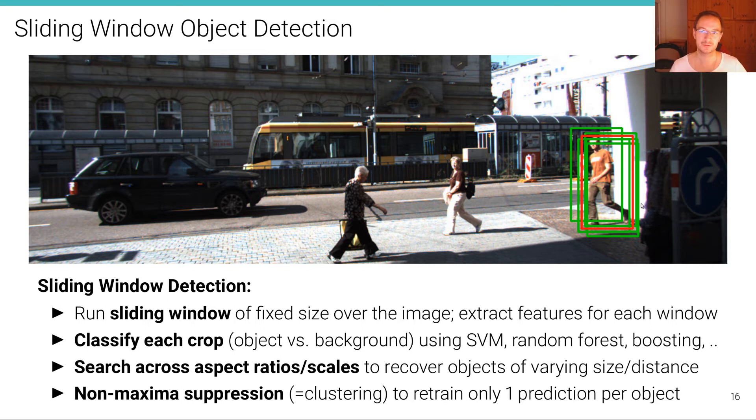We want to keep only the best ones, and only one for each of the objects in the scene. And this is what non-maximum suppression does. It's a clustering heuristic that looks at the overlap of bounding boxes and keeps only, if there's a large overlap, the one that has the highest confidence. So it retains only one prediction per object.